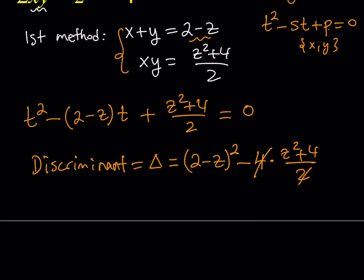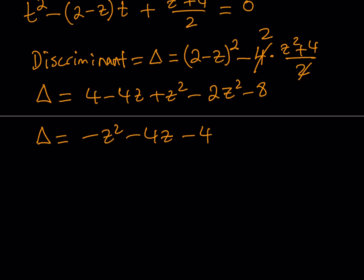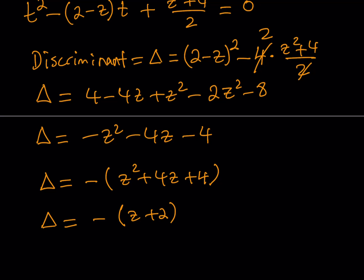After distributing the negative 2, we subtract 2z squared plus 8. So the discriminant equals z squared minus 2z squared minus 4z plus 4 minus 8, which simplifies to negative z squared minus 4z minus 4. If you take out a negative 1, this is equal to negative (z plus 2) squared.